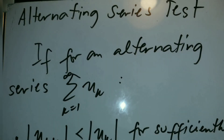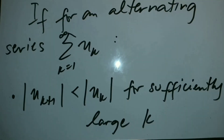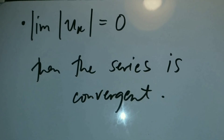We have the alternating series test. If for an alternating series summation u_k, the absolute value of u_{k+1} is less than the absolute value of u_k for sufficiently large k, and if the limit of the absolute value of u_k as k approaches infinity equals 0, then the series is convergent.